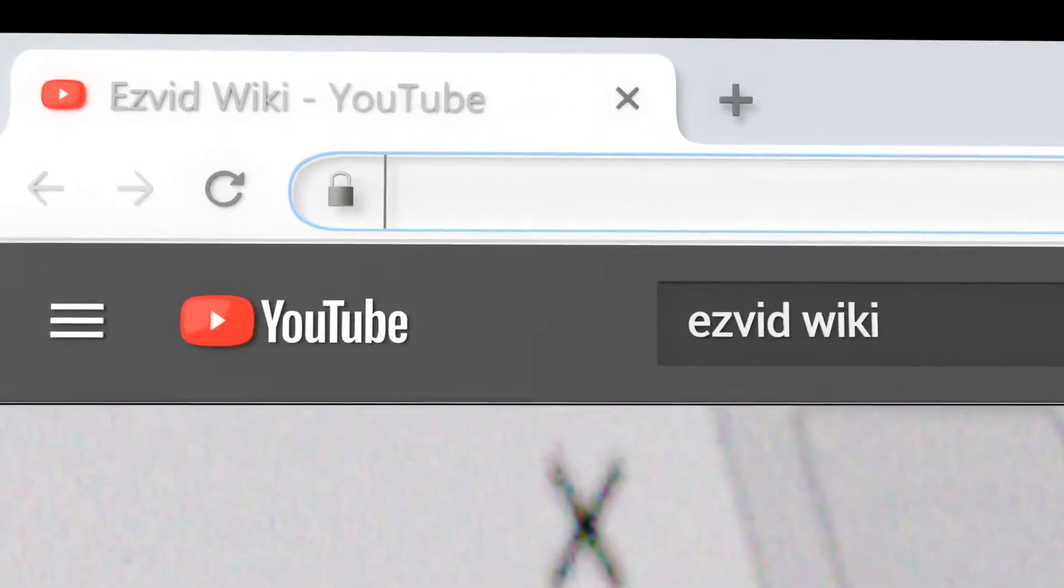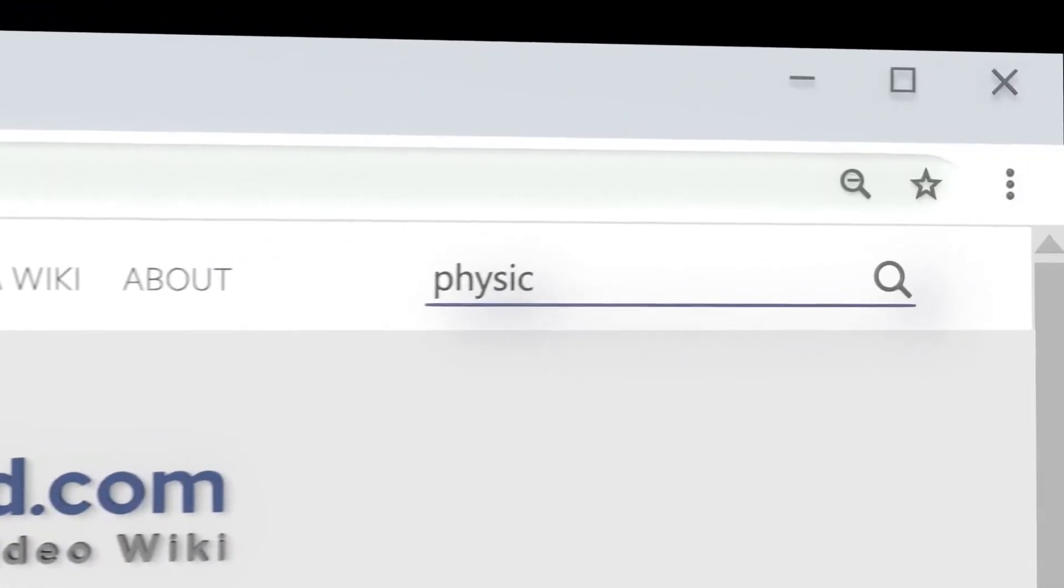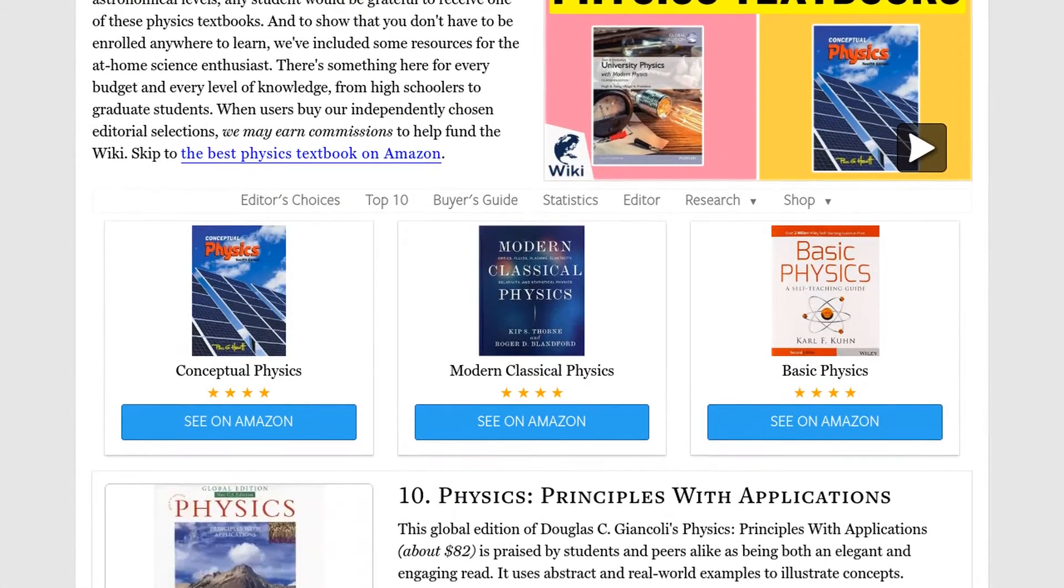Our newest choices can only be seen at wiki.easyvid.com. Go there now and search for physics textbooks or simply click beneath this video.